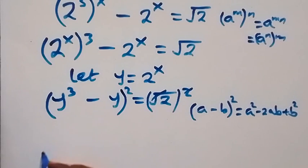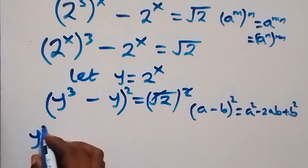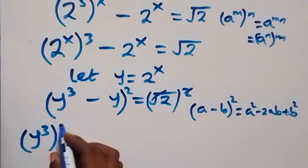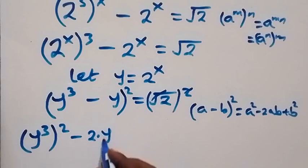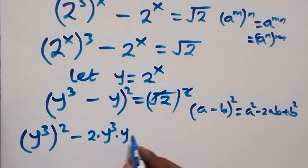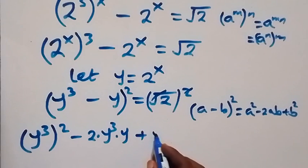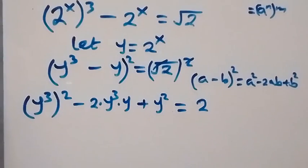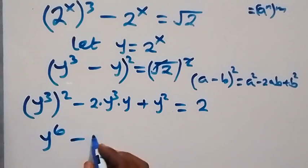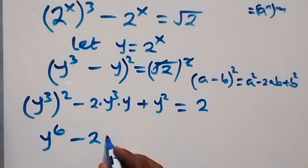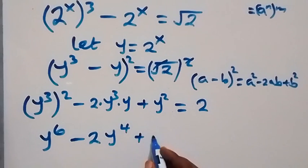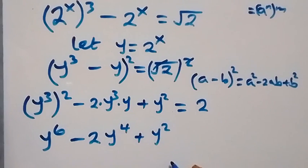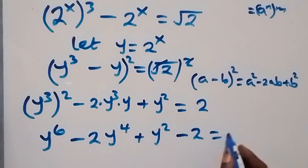Following this expansion, we have y raised to power 3 squared, then minus 2 times y raised to power 3 times y, then plus y squared, which equals 2. We can simplify: the power multiplies, giving us y raised to power 6, then minus 2 times y raised to power 4, then plus y squared. Taking 2 to this side, that becomes minus 2 equals 0.